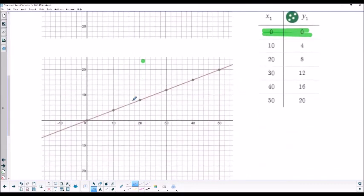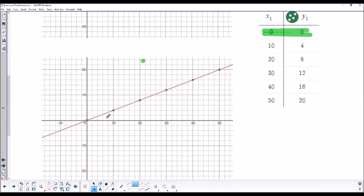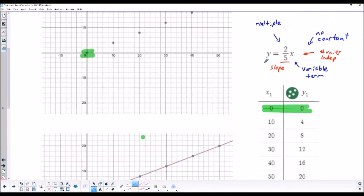And so then if we just draw the graph of y equals two-fifths x, we see that it does go through the origin and it continues down in both directions. Again, there can be other graphs, some with negative slopes, others with positive, some with whole number slopes, others with fractions or decimals.